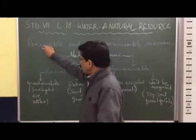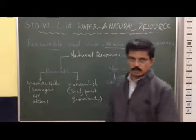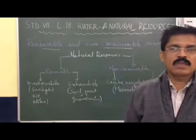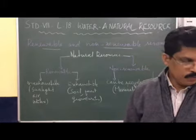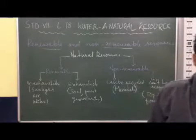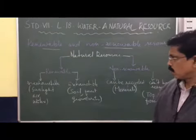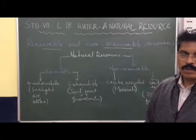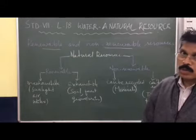Renewable resources are resources which cannot be run out or finished. If we use them, those can be replaced. These natural sources can be replaced by natural processes. So renewable resources are resources which cannot be exhausted or finished up, and can also be produced through natural methods.